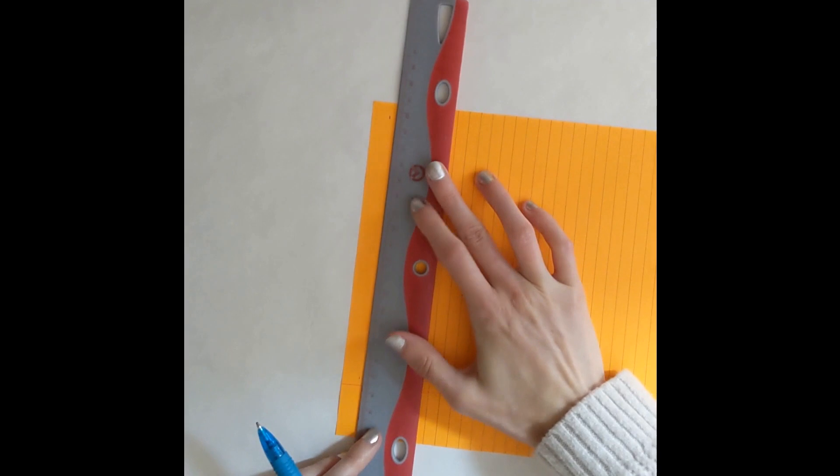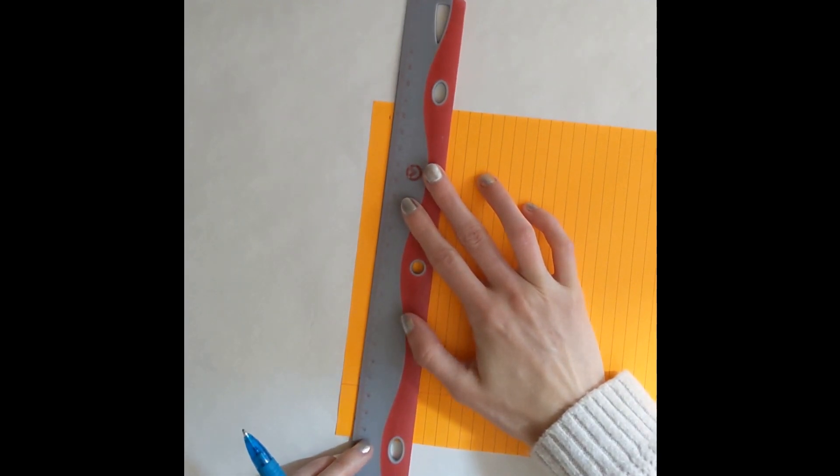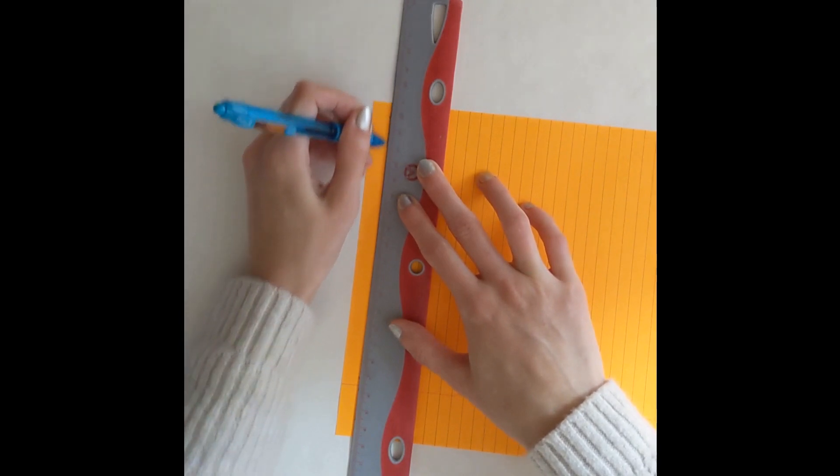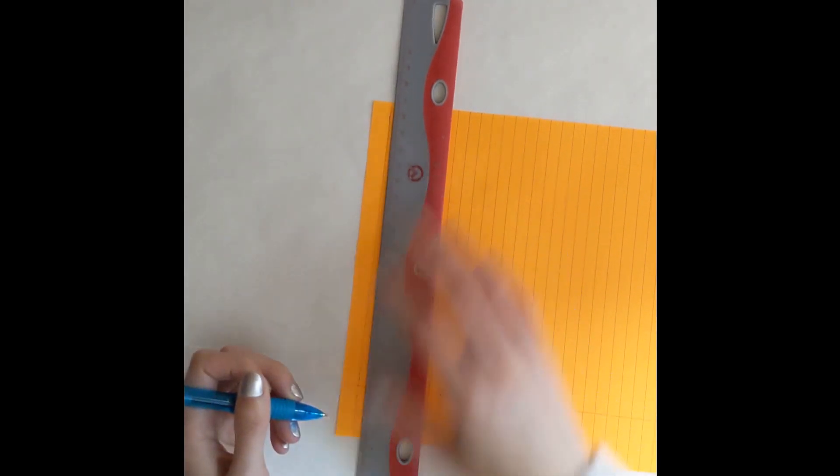Once you've marked your measurements, draw a line connecting your two dots. Then take your scissors and cut along the line you've just drawn. This strip of paper is going to be our base template for an origami star.